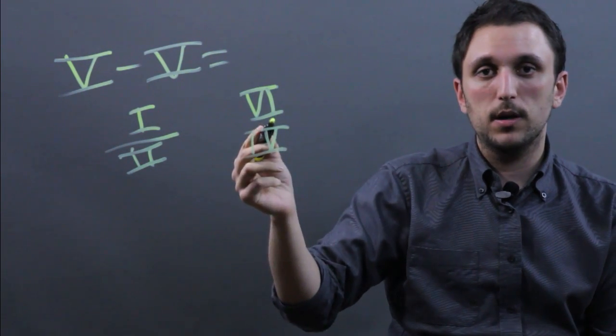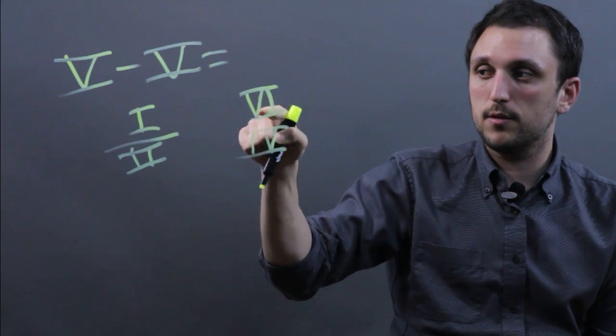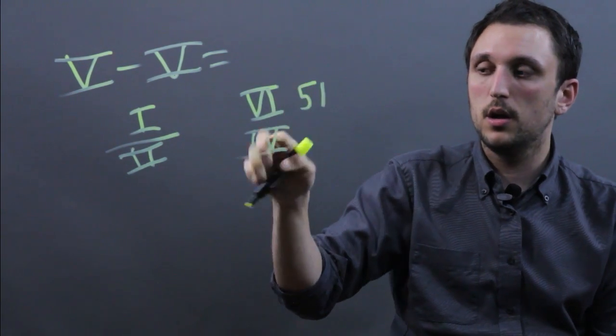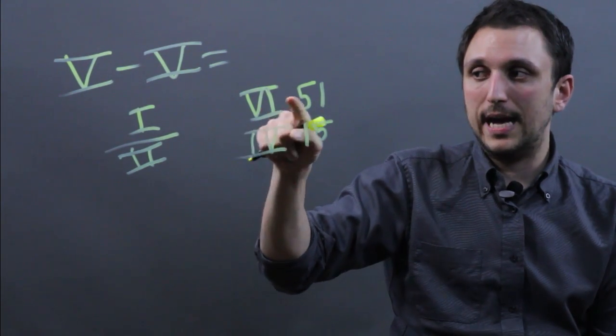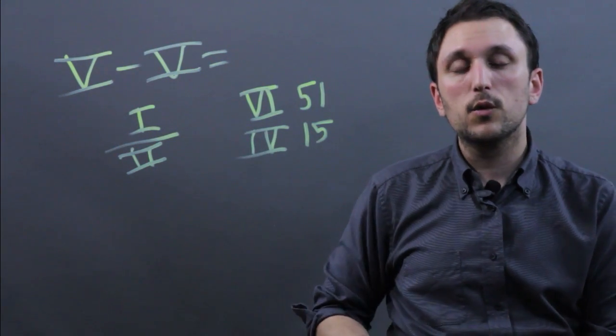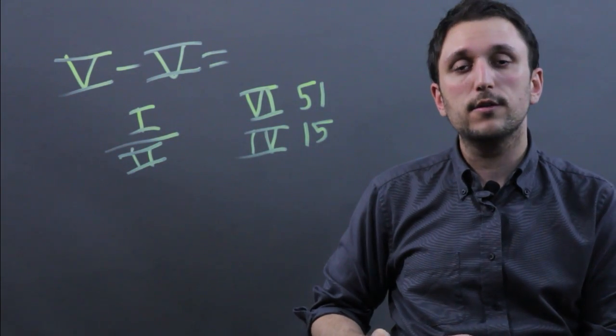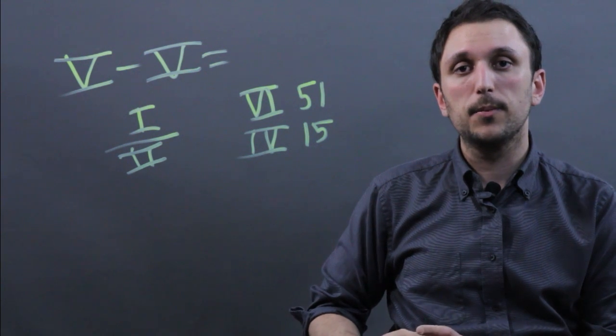This is different from the modern system where this is 5, 1, so we'd say 51, and this is 1, 5, so we'd say 15. Here you're adding and here you're subtracting. So I'm Charlie Kesov and you just learned the disadvantages of the Roman numeral system. Thanks a lot.